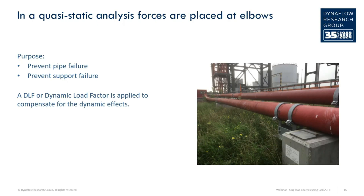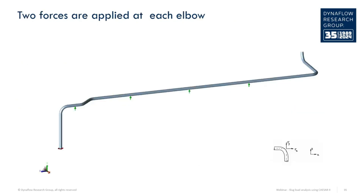This, however, is not the case for slug loads. At a 90 degree elbow, two forces are applied. The first stops the slug in the direction that it is moving in, and the second is the reaction force when the slug travels around the corner.